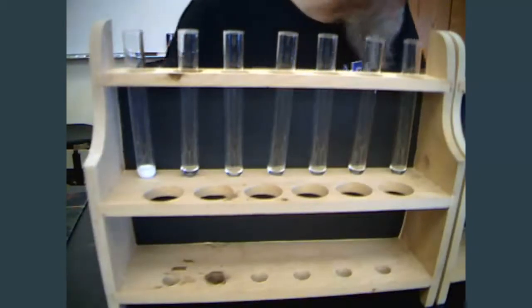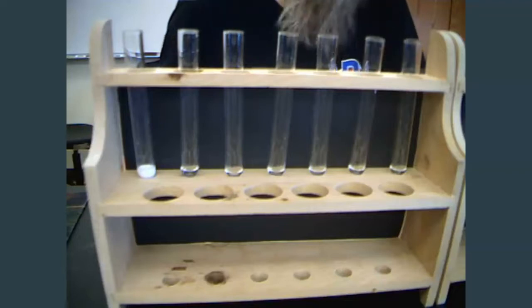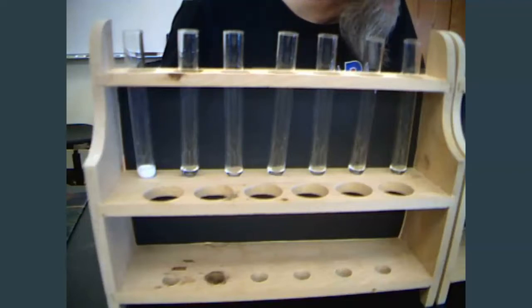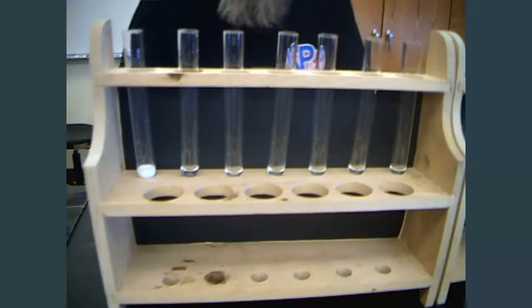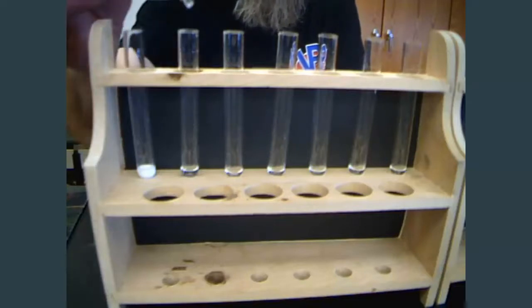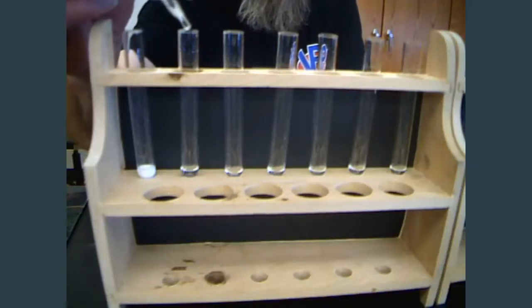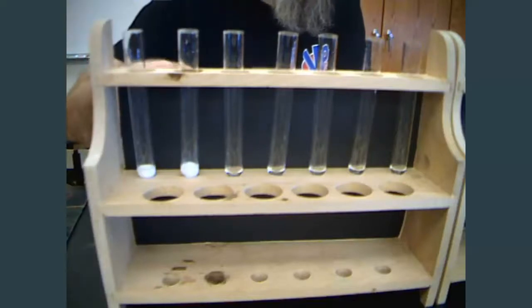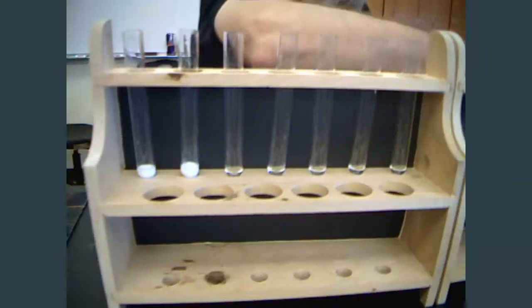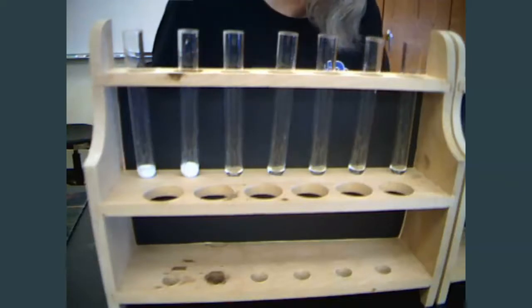In test tube two, we have to put a little bit of HCl, hydrochloric acid. Silver nitrate, hydrochloric acid, reaction two. And again, we get quite a bit of a reaction there between the HCl and the silver nitrate.